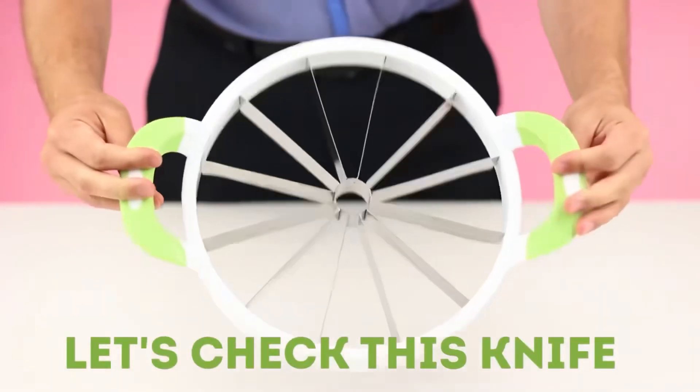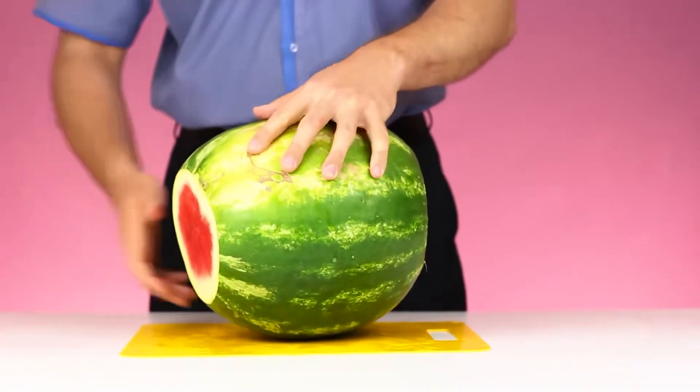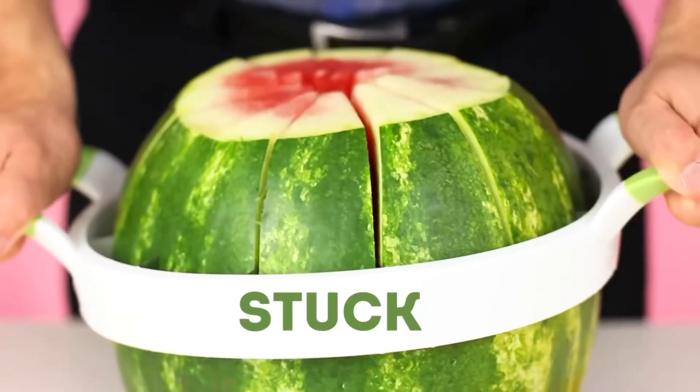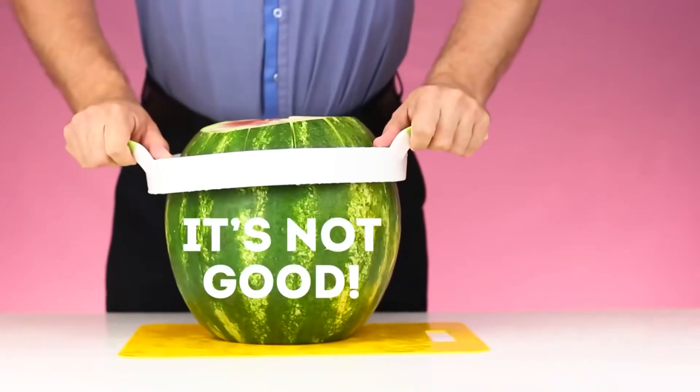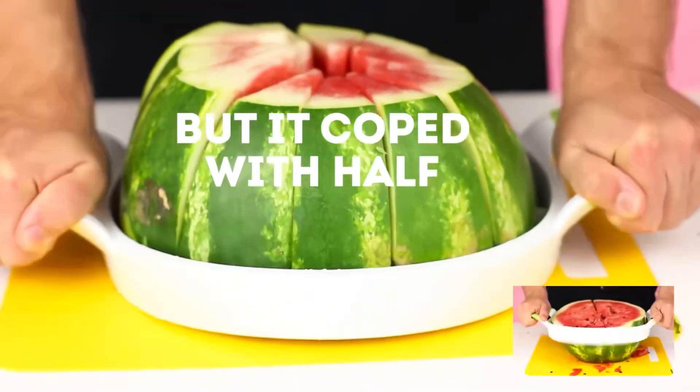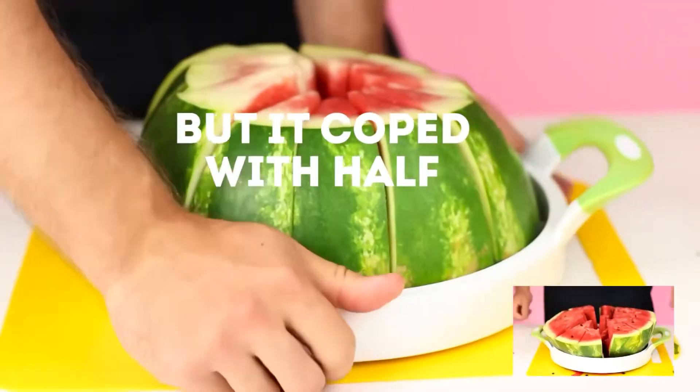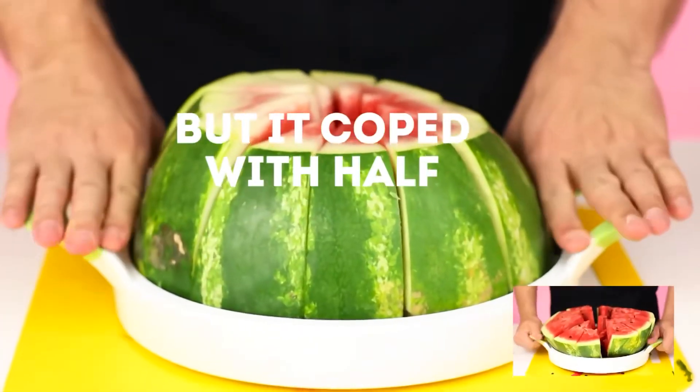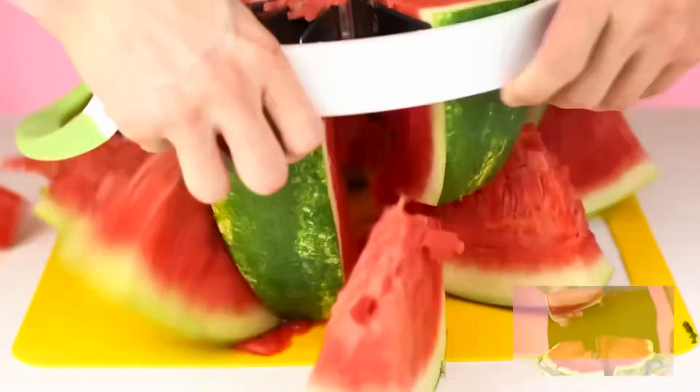Let's check with the special knife for slicing watermelon. Cut off the watermelon base and install it for slicing. We insert the knife and press it with all our might. It seems to be stuck. We'll have to split the watermelon in half. We have to take out all the knife and get several perfectly sliced pieces at once.